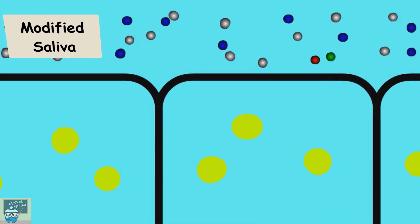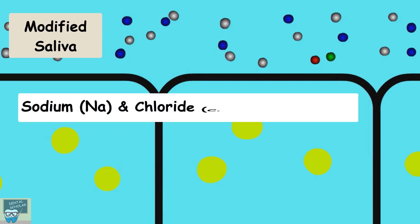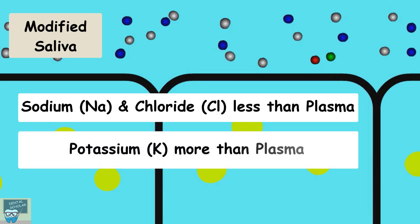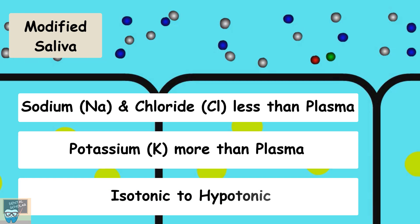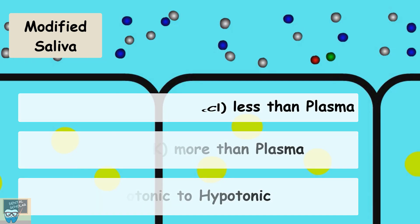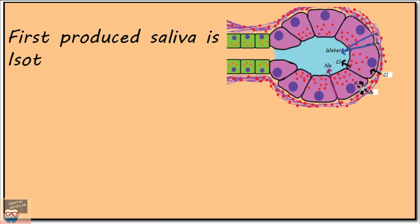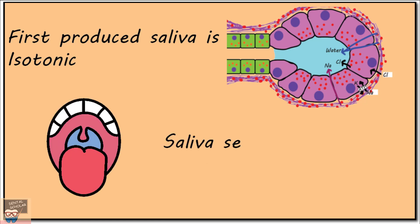This modified saliva has sodium and chloride content less than plasma, and potassium content more than plasma. And after modification, the isotonic saliva becomes hypotonic. So the first produced saliva is isotonic, while the saliva secreted in oral cavity is hypotonic.